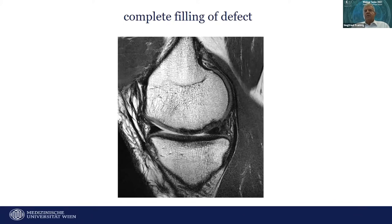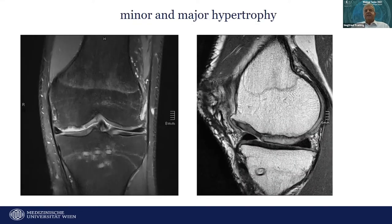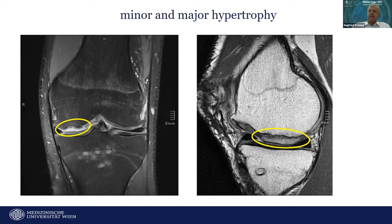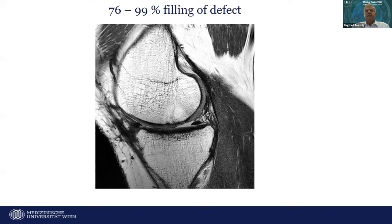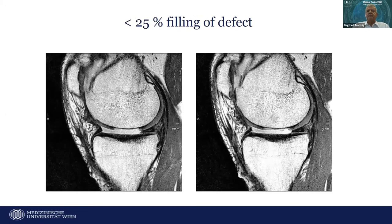Examples show complete filling of the defect — though in one case the repair tissue shows markedly hyper-intense signal suggesting fibrous tissue formation. Another example shows minor hypertrophy under 150% of adjacent cartilage thickness, versus major hypertrophy comprising more than 150% of adjacent cartilage thickness. Further examples show under-filling at 75–99%, and the worst outcome with less than 25% filling of the defect.